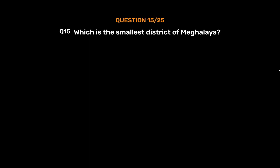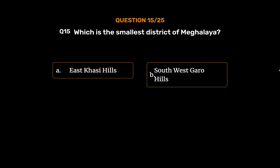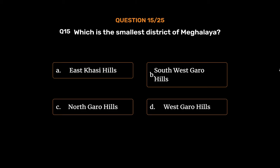Question number 15. Which is the smallest district of Meghalaya? Option A: East Khasi Hills. Option B: South West Garo Hills. Option C: North Garo Hills. Option D: West Garo Hills.